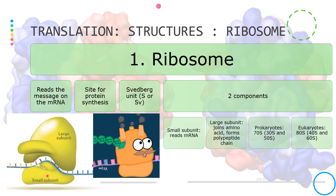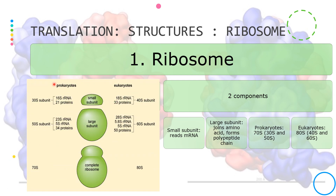In the cytoplasm, the small and large subunits are separate — they are not together when not participating in protein synthesis, and they remain like that waiting to be used for translation. In prokaryotes, the small subunit is 30S, the large subunit is 50S, and a complete ribosome measures 70S. Eukaryotes have a 40S small subunit and a 60S large subunit, and the complete eukaryotic ribosome measures 80S.